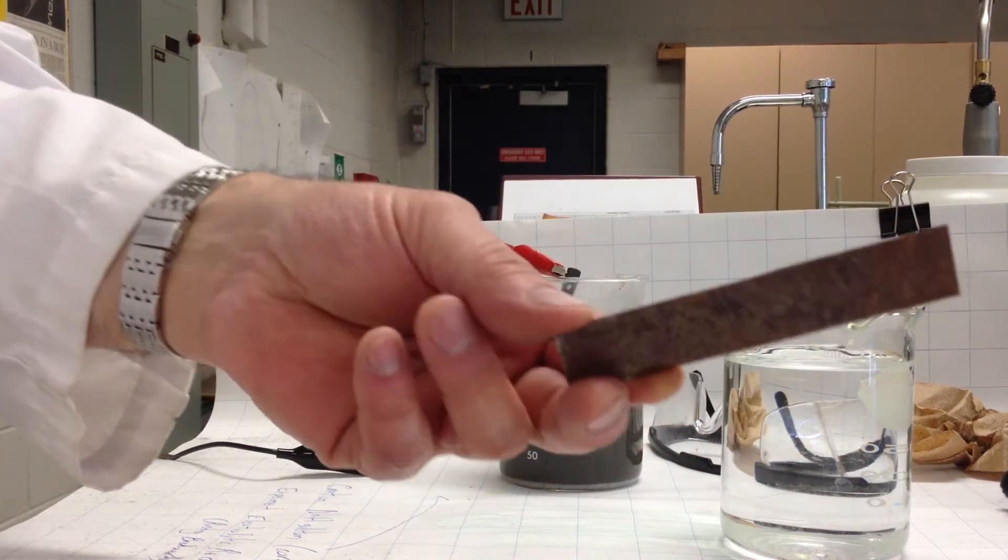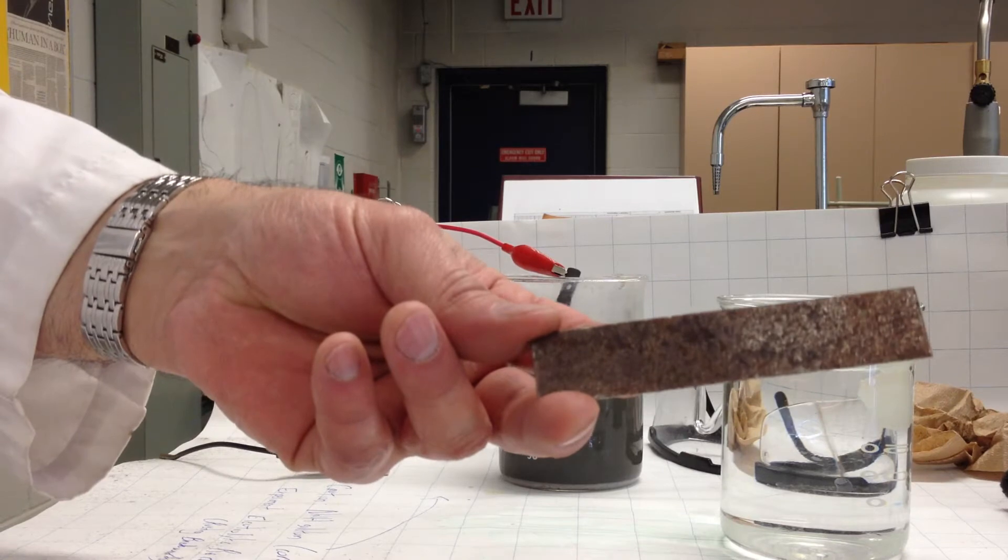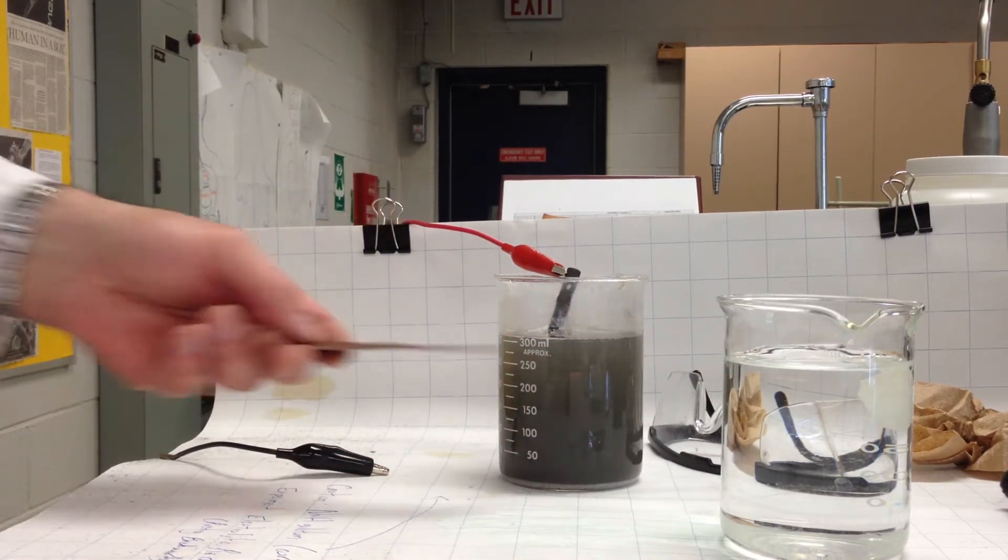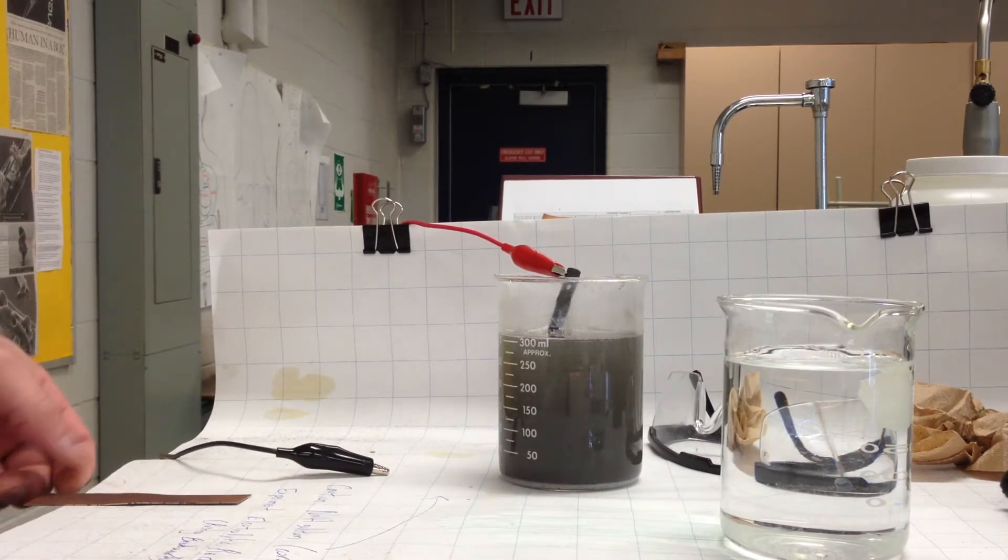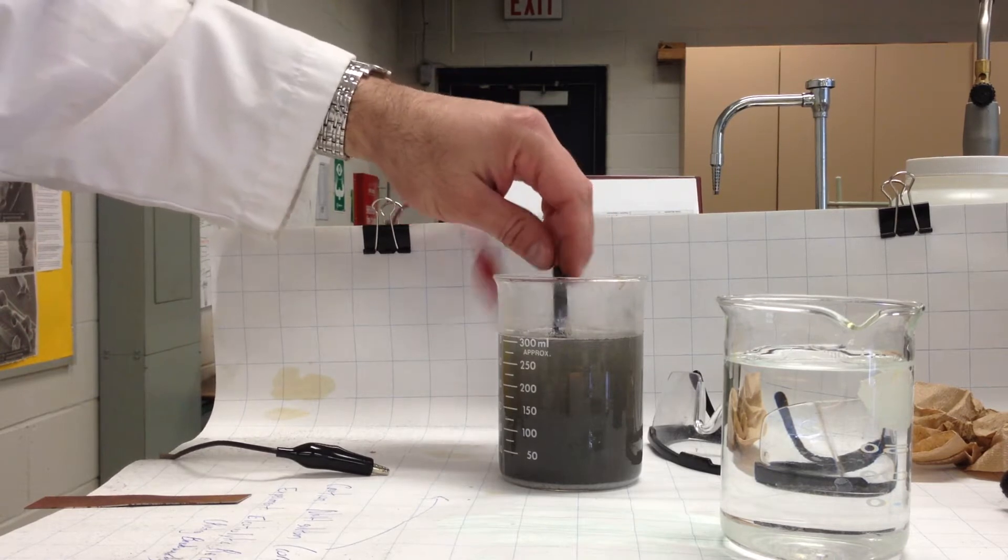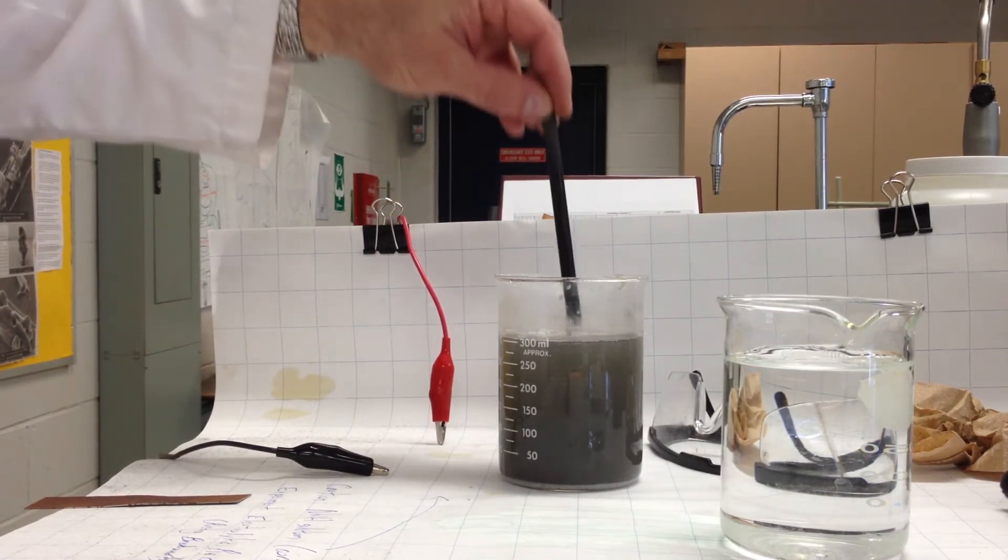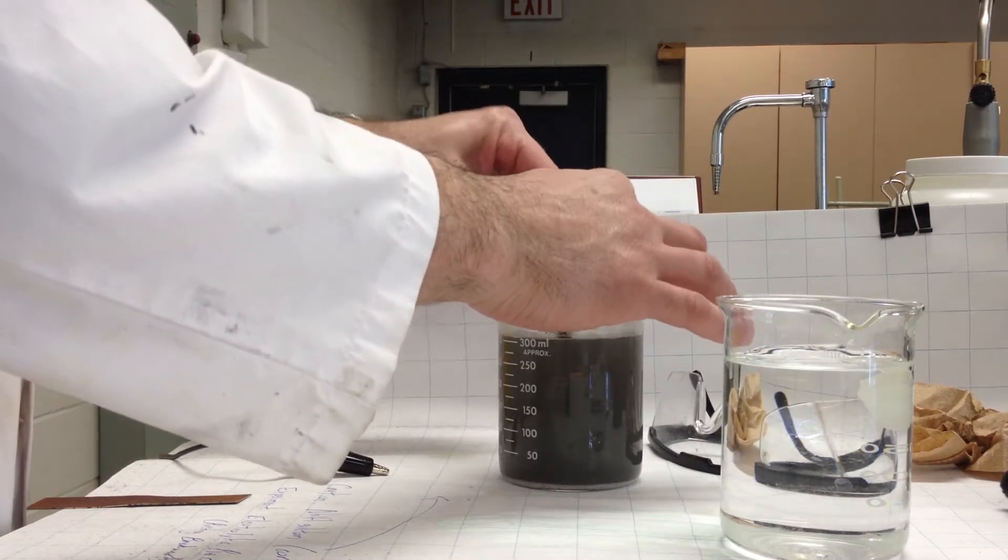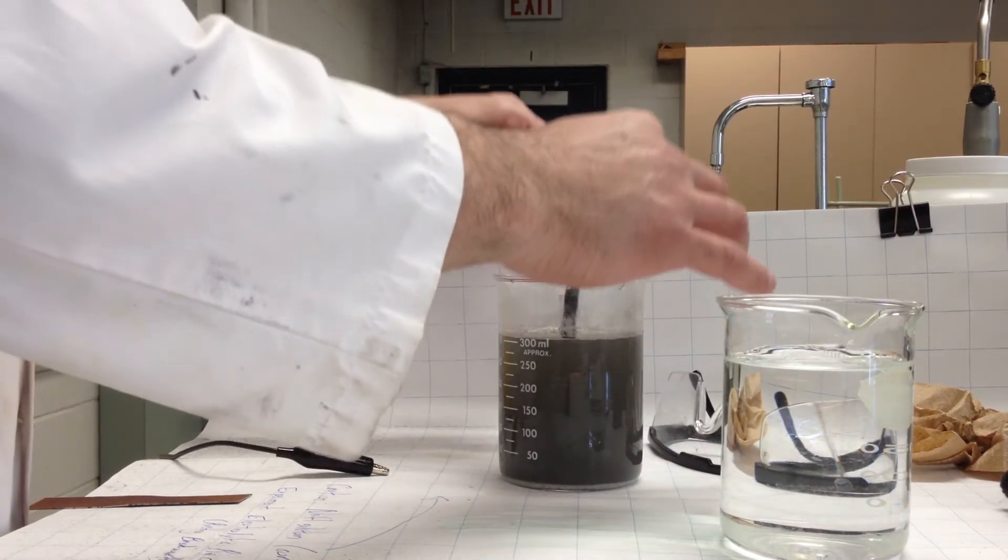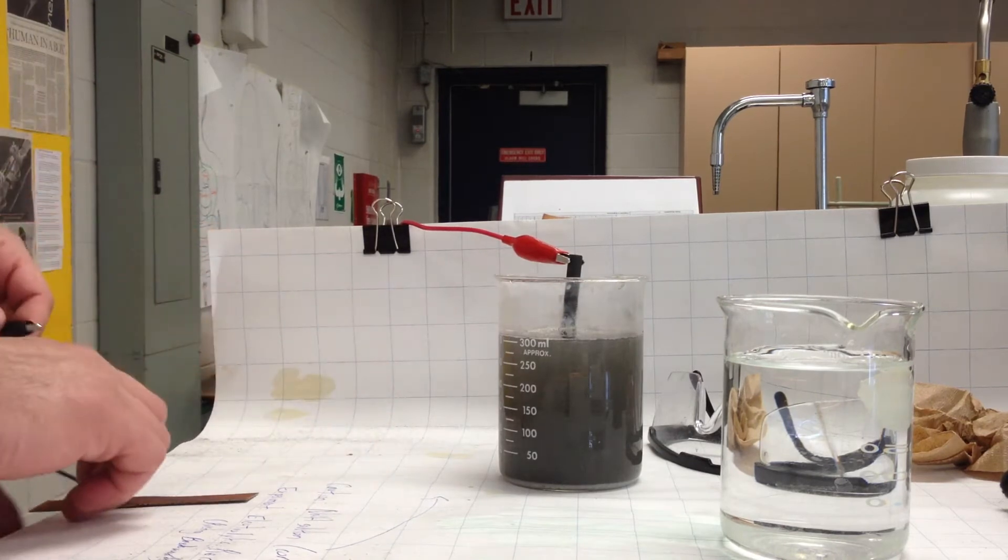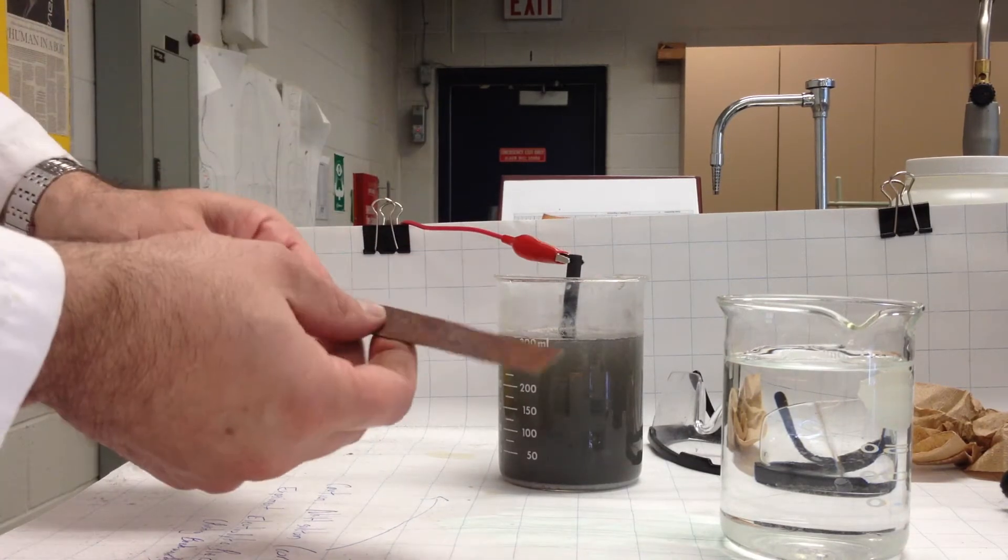In this demonstration we're going to show how we can take a piece of rusted iron and place it in a solution of sodium hydroxide with a carbon rod connected to the positive of a transformer, and we connect the negative end to the metal.